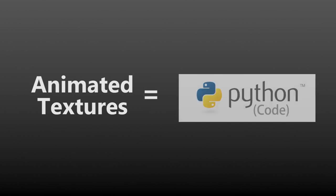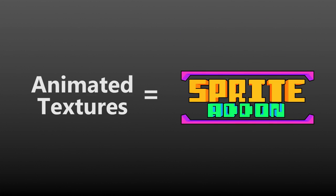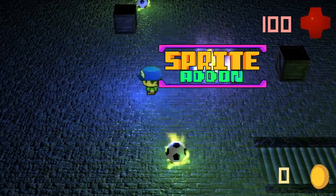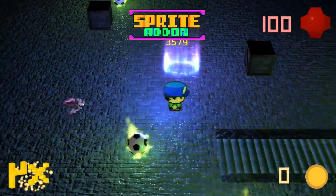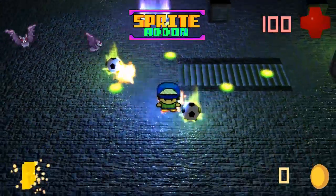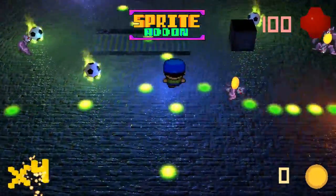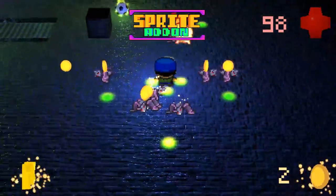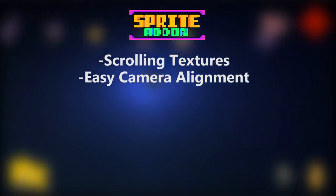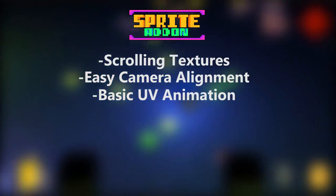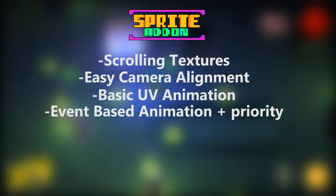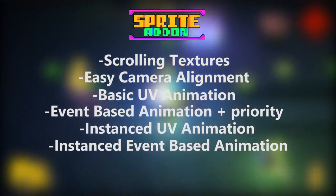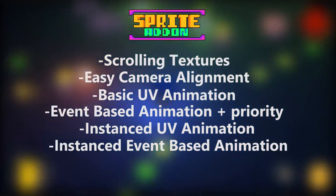Basically if you want to do anything involving animated textures you need to know Python — and that's what this add-on is going to change. The Blender Game Engine sprite add-on is a new way of handling animated textures, replacing the old broken version with a completely new and powerful system. This add-on includes scrolling textures, easy camera alignment, UV animation, and event-based animation with priority and instance versions of UV and event-based animation.